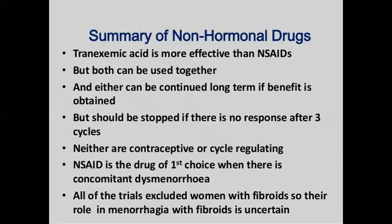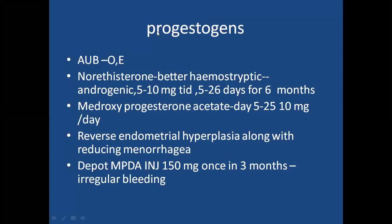These drugs are used in ovulatory AUB and also AUBE. Coming to hormonal therapy, progestogens are useful in AUBO and AUBE. Commonly we use norethisterone acetate — it is a better hemostatic drug and has androgenic properties. It is available as 5 to 10 milligrams tablets, dose is three times a day for control of bleeding. After stoppage of bleeding she takes two tablets per day for three days, then one tablet per day for 16 to 18 days to get a withdrawal cycle.